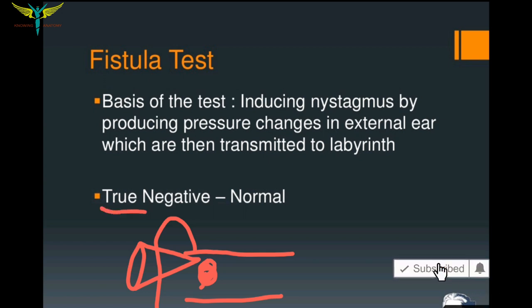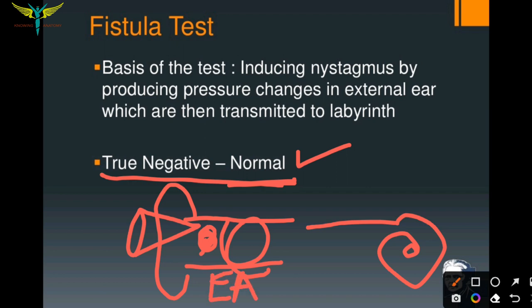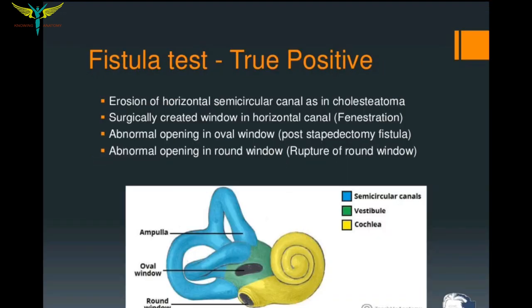The normal fistula test is negative. A true negative fistula test indicates normal findings, because the pressure changes in the external auditory canal (EAC) cannot transmit into the vestibule or the labyrinth.